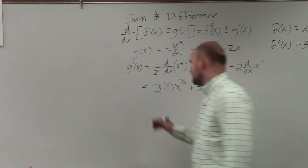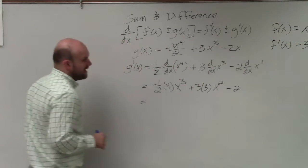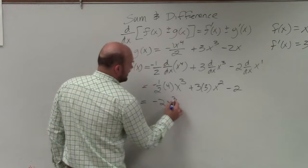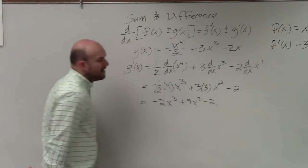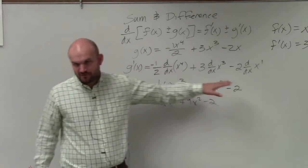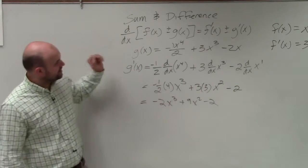And now we can just go ahead and simplify our answer. Negative one-half times 4 is going to be negative 2x cubed plus 9x squared minus 2. I'm breaking everything down for this, but yes ladies and gentlemen, you could quickly just go from here down to here.